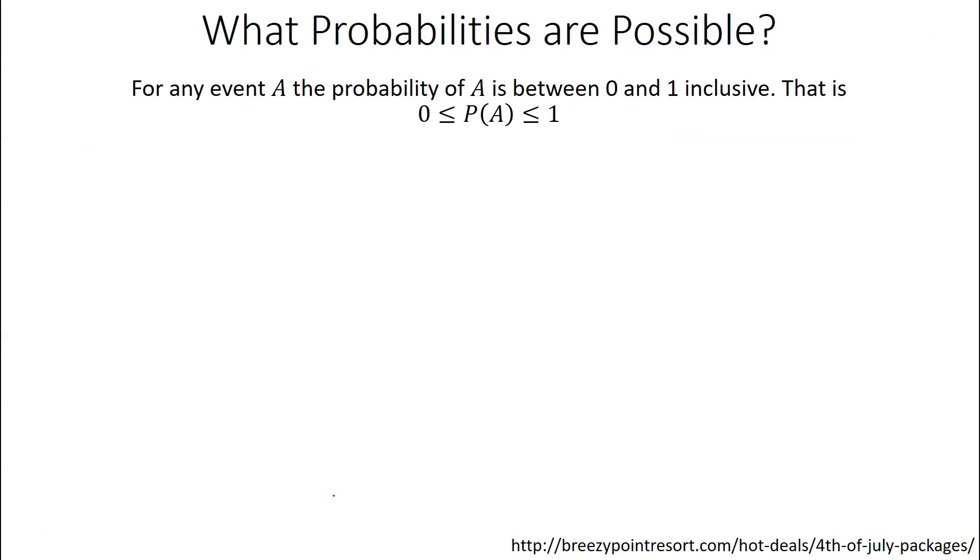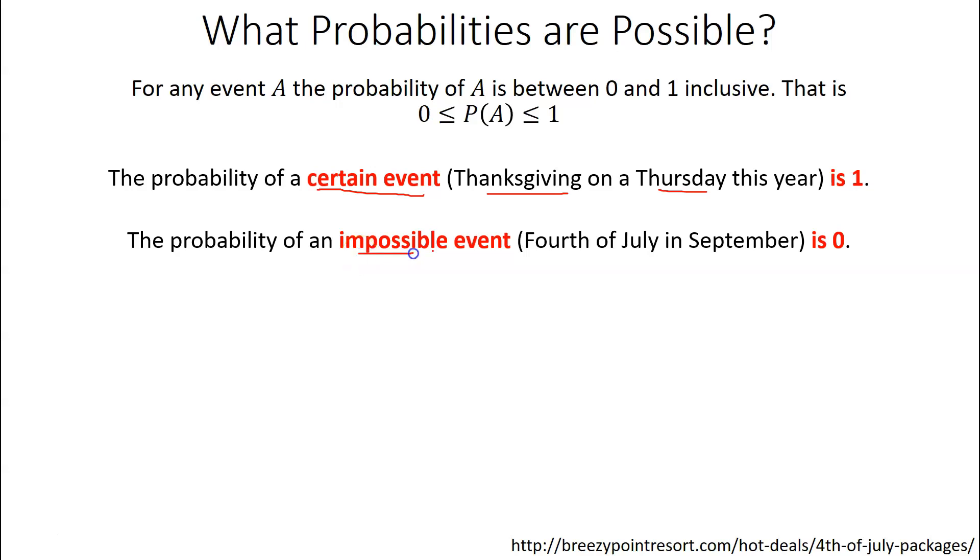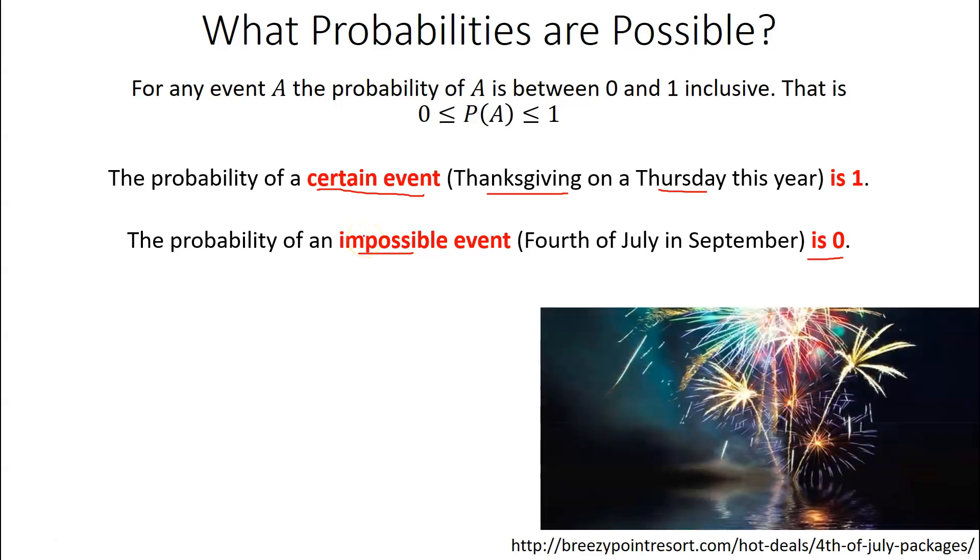When you talk about probabilities, you've got to look at what could possibly, the range of what could possibly happen. Well, the range is fairly simple. 0% chance up to 100% chance. That's what the probability of any event is. You can't go more than 100%, and you can't go less than 0%. If it's 100%, we say it's a certain event, like Thanksgiving being on a Thursday this year. Well, that'd be a 100% chance. Impossible events, of course, are zero, like the 4th of July being in September this year. Well, that's going to be a 0% chance. There are things that are certain, and there are things that are impossible. I just said that statisticians tend to avoid those absolute statements a lot of the time. At least they don't use them as much as other people do.